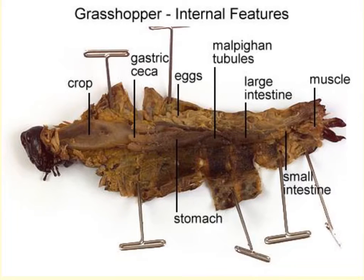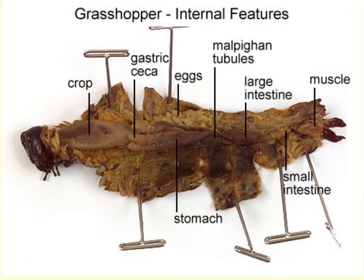The esophagus leads to the gizzard and then to the stomach. Just posterior to the gizzard, you'll find finger-like projections called the gastric cecae, which are attached at the junction between the gizzard and the stomach. Following it back to the hindgut, you'll find very thin structures called malpighian tubules, which act like kidneys by removing nitrogen waste from the insect.